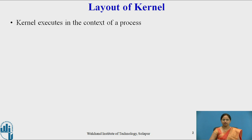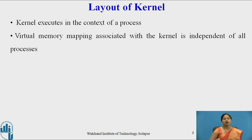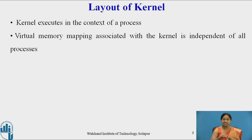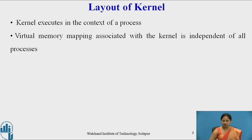Let us see the layout of the kernel. Though the kernel executes in the context of a process, the virtual memory mapping associated with the kernel is independent of all processes. Multiple processes execute simultaneously in the system, and the virtual memory mapping for each process is independent of the kernel. The kernel is not aware of the virtual memory mapping associated with the processes.